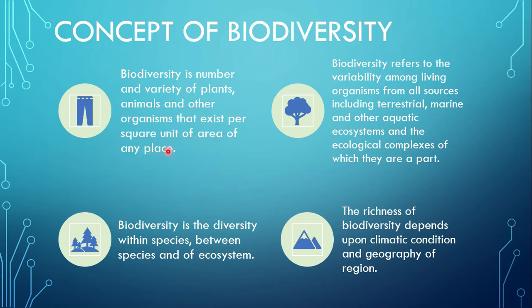So in any place, per square unit, how many varieties of plants, animals, and other organisms are there? That is called biodiversity — the number and variety of plants, animals, and other organisms that exist in one square unit area. That is called biodiversity.